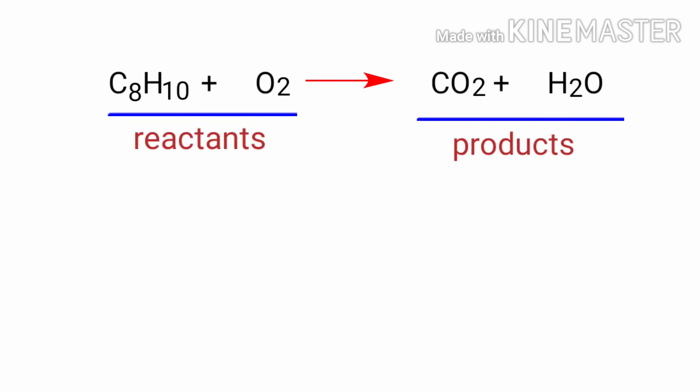In this equation, the reactants are ethyl benzene and oxygen and the products are carbon dioxide and water. If you look at this equation, the equation is not balanced.